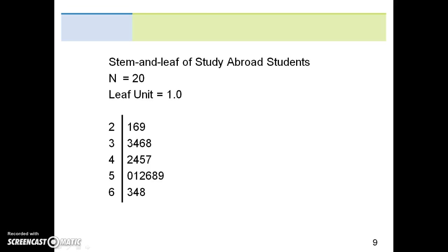The stem and leaf of study abroad students is shown below. N, which is the total sample size, is 20 and the leaf unit is 1.